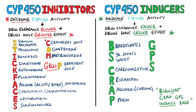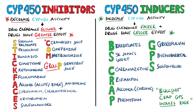P is for phenytoin, yet another anti-seizure drug. G is for griseofulvin, which is an antifungal drug. The second P is for phenobarbital, our final anti-seizure medication that also works as a sedative. Finally, S stands for the sulfonylureas, a class of drugs used to increase insulin production in diabetics.